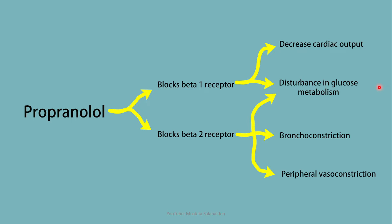Hypoglycemia results from decreased glucagon secretion and decreased glycogenolysis, and is considered a side effect of this drug. Blocking beta 2 causes bronchoconstriction. Beta 2 inhibition also leads to peripheral vasoconstriction, because blocking beta 2-mediated vasodilation causes peripheral vasoconstriction.